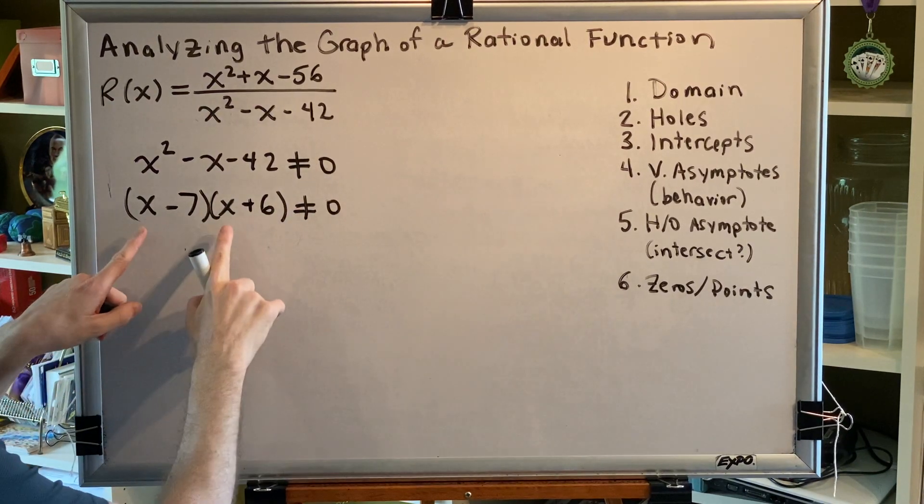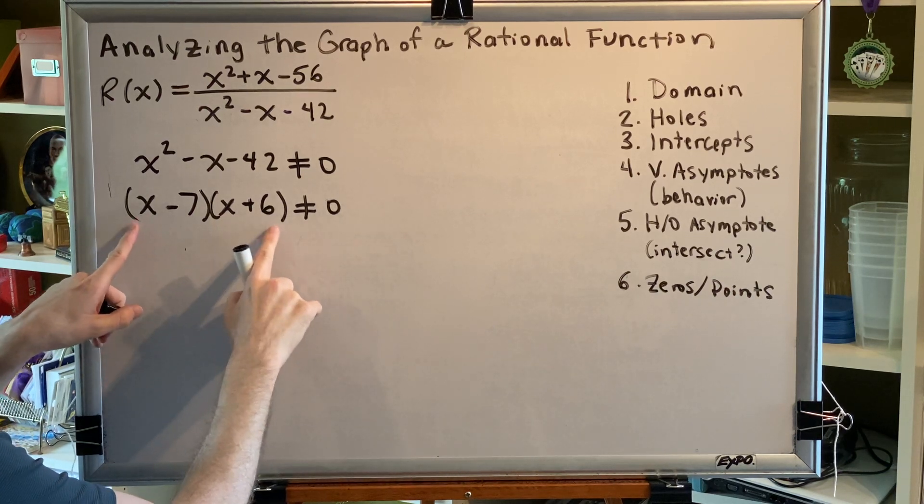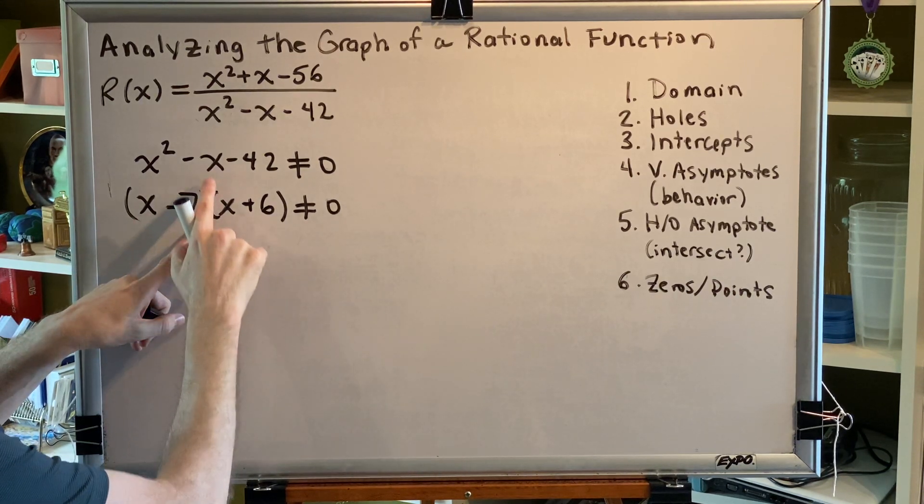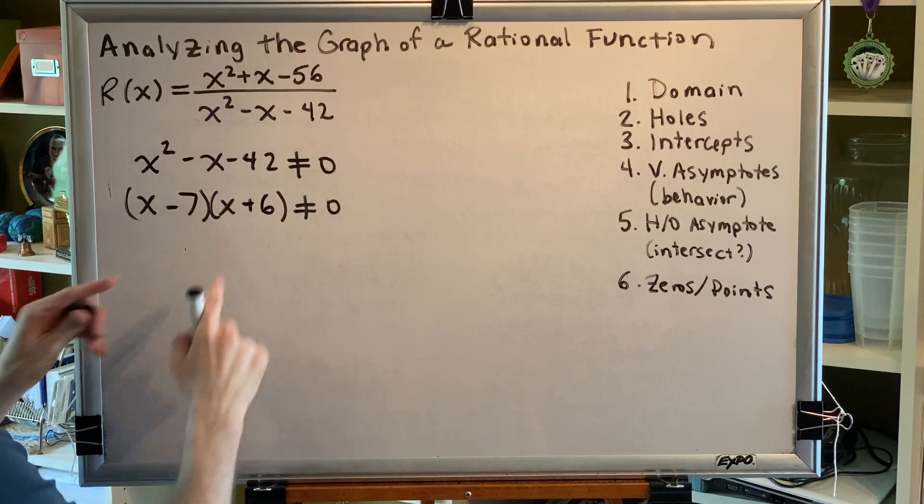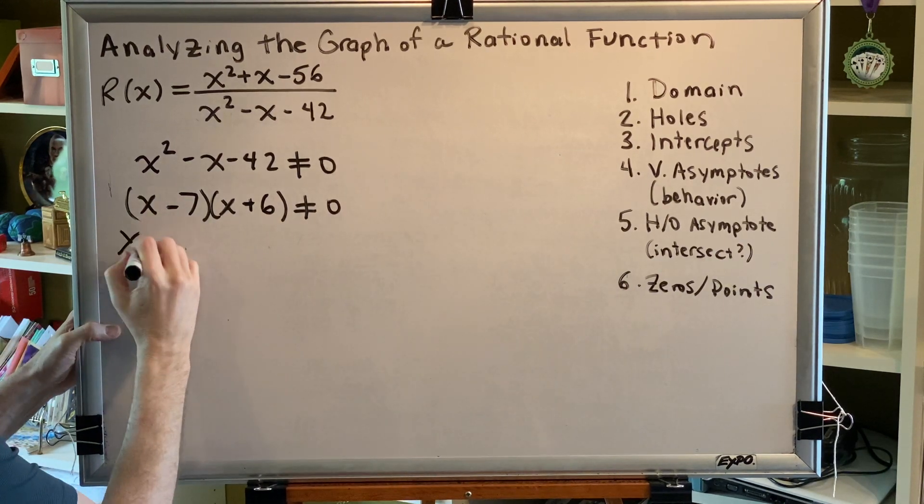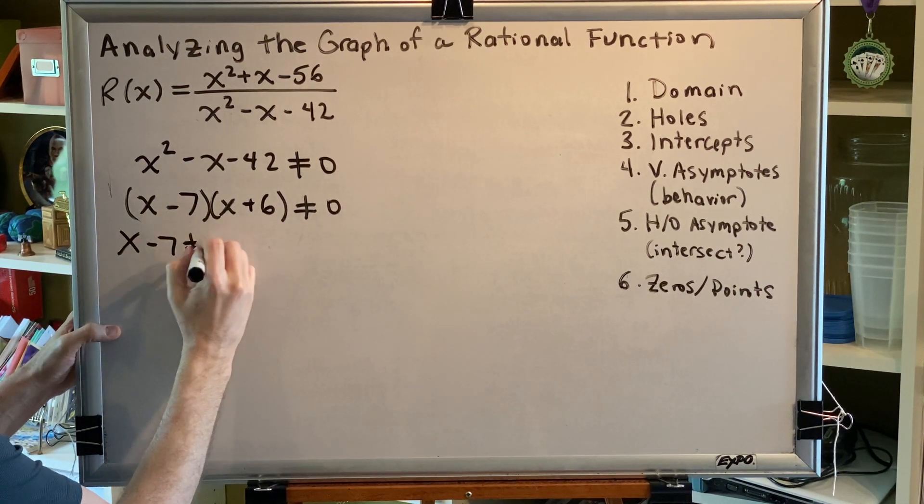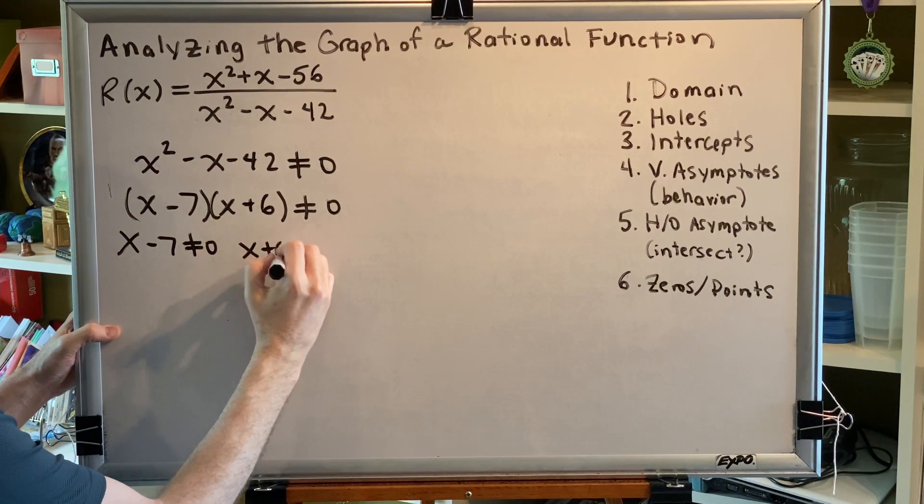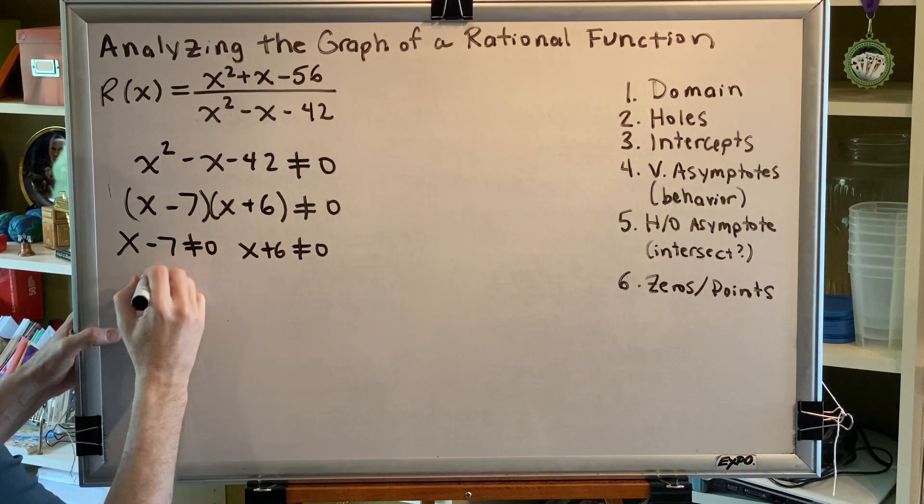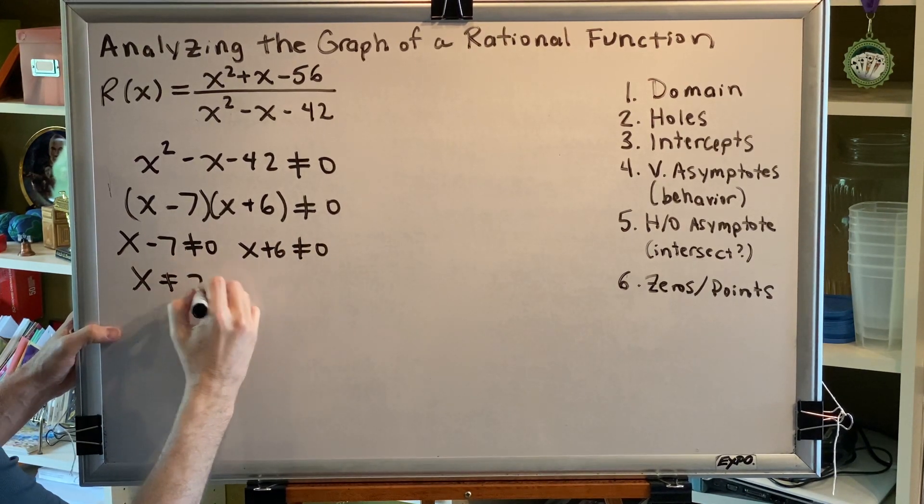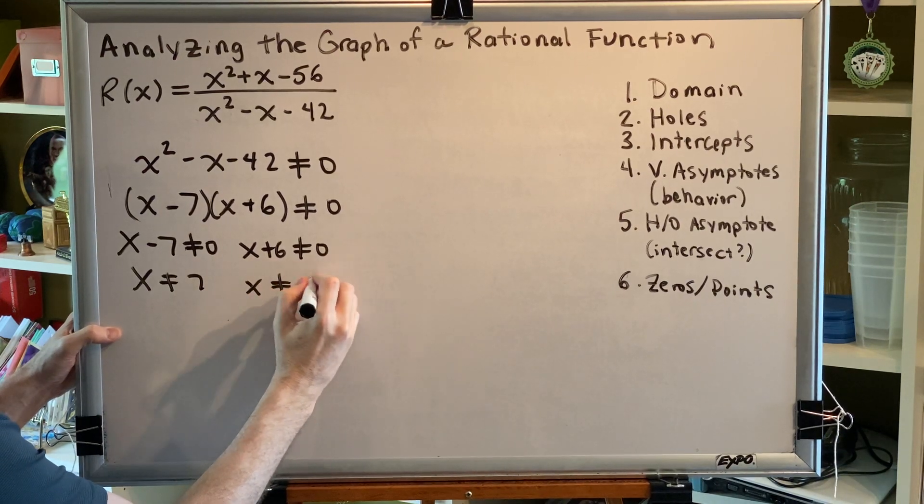We can check this with FOIL. x squared plus 6x minus 7x makes the minus 1x minus 42. By the zero product property this tells us that x minus 7 is not allowed to be 0 and x plus 6 is not allowed to be 0. So we get that x is not equal to 7, x is not equal to negative 6.